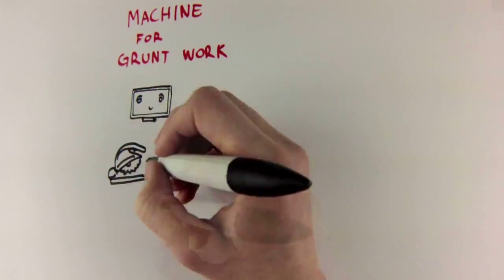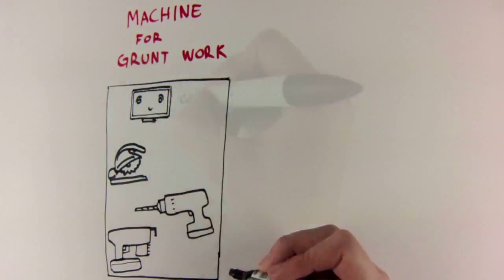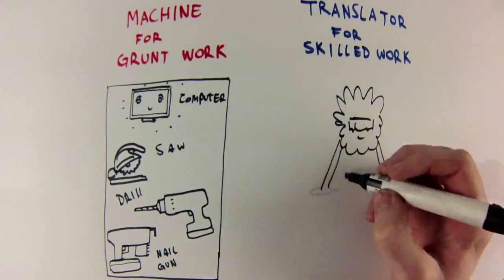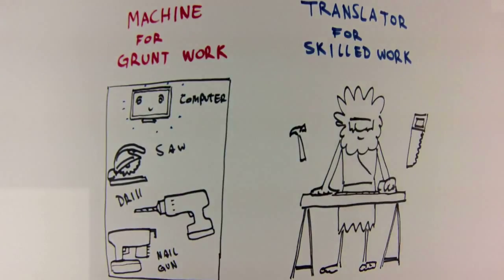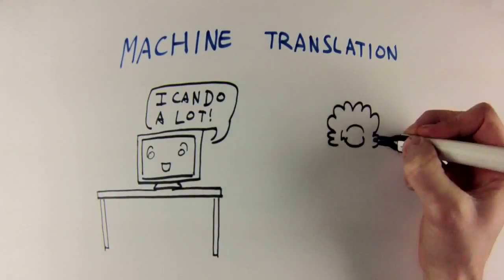In the same way a carpenter might have an electric saw and a nail gun, he'll still use a hammer or cut timber by hand for the parts of the job where the power tools are unsuitable. The same is true for translation. The machine can do an awful lot, but not everything.